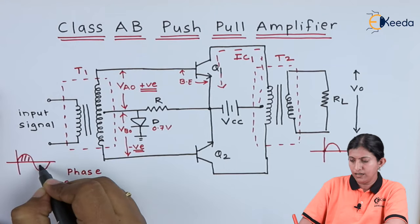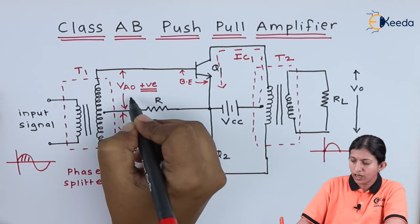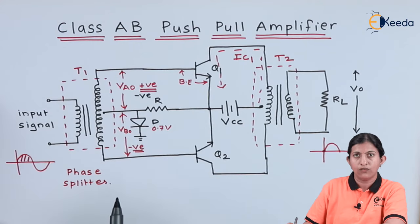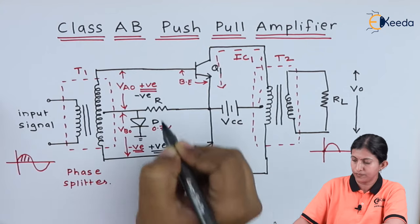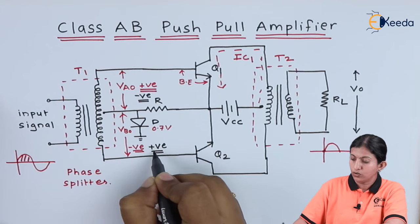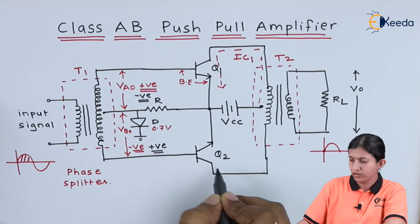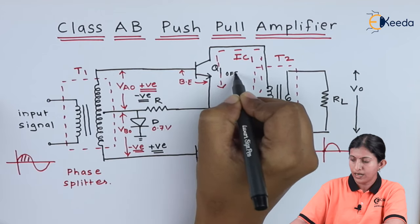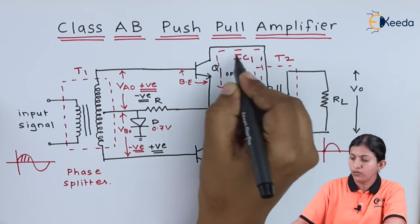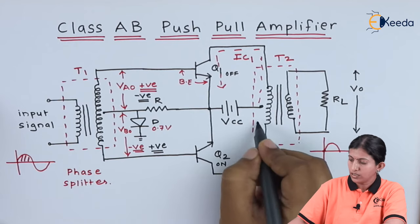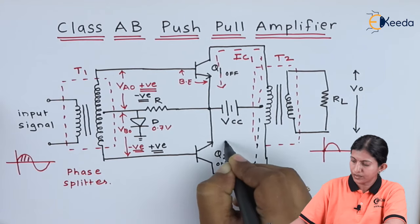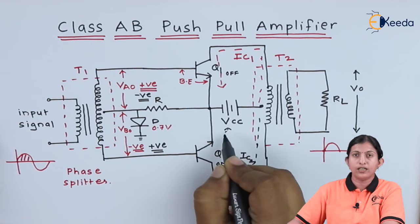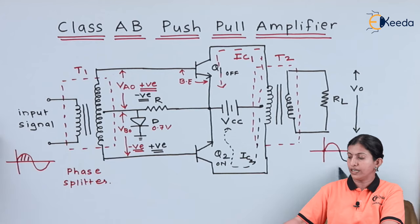During the negative half cycle, the exactly reverse operation happens: VAO voltage is negative and VBO voltage is positive. Due to this positive voltage, transistor Q2 will be on, and due to the negative voltage, transistor Q1 will be off. There is no current flow through transistor Q1. Because Q2 is on, current IC2 flows through the transistor in this direction. At the output, we get the negative half output signal.